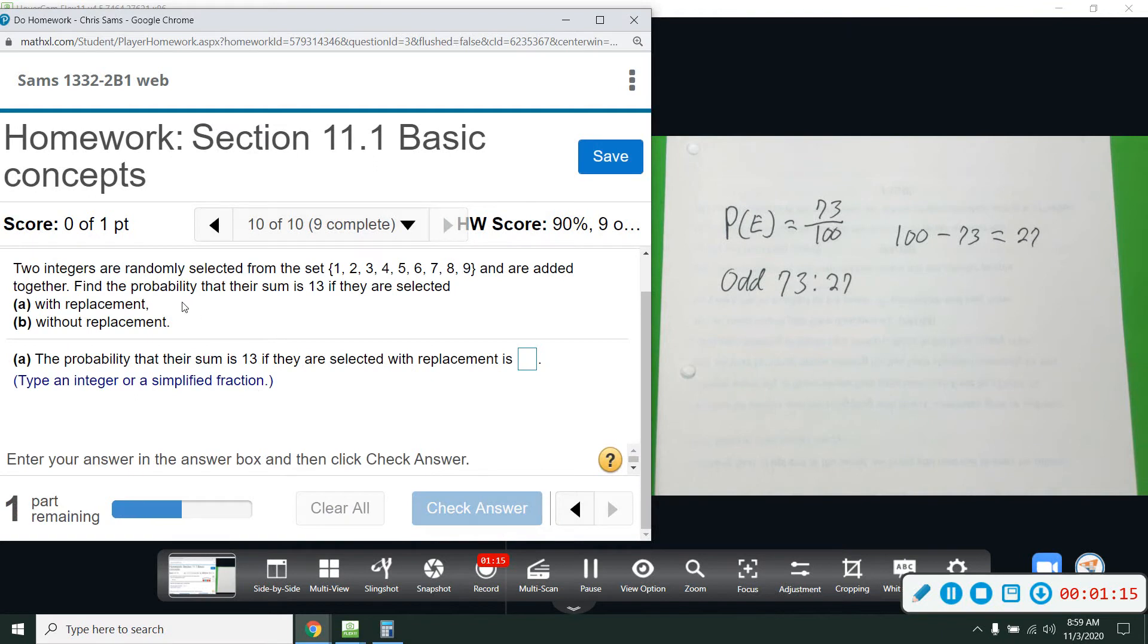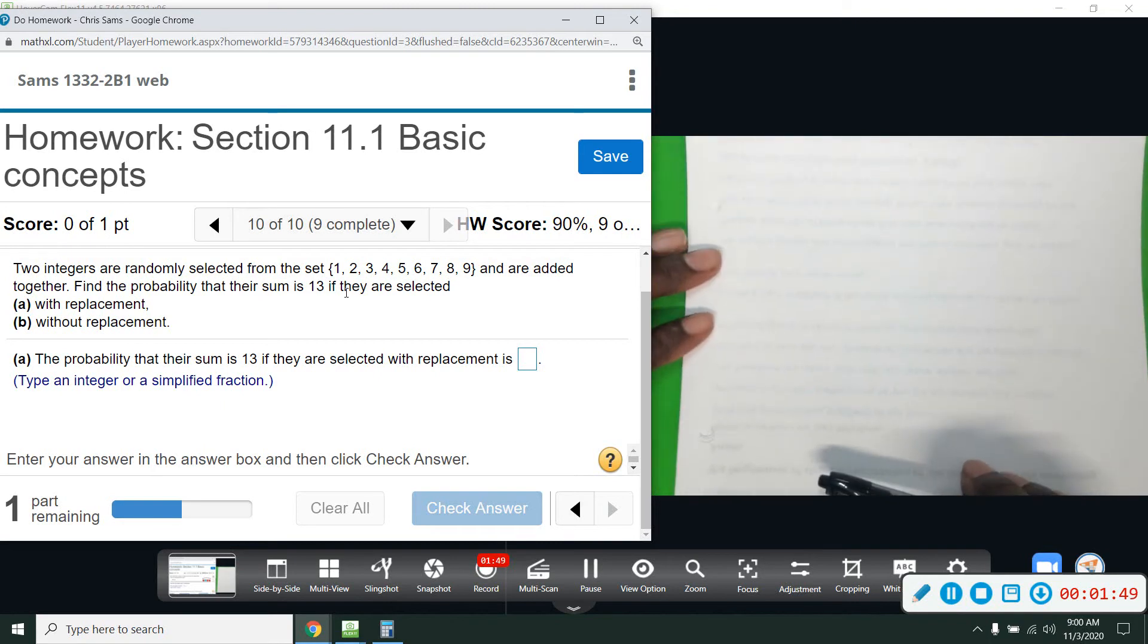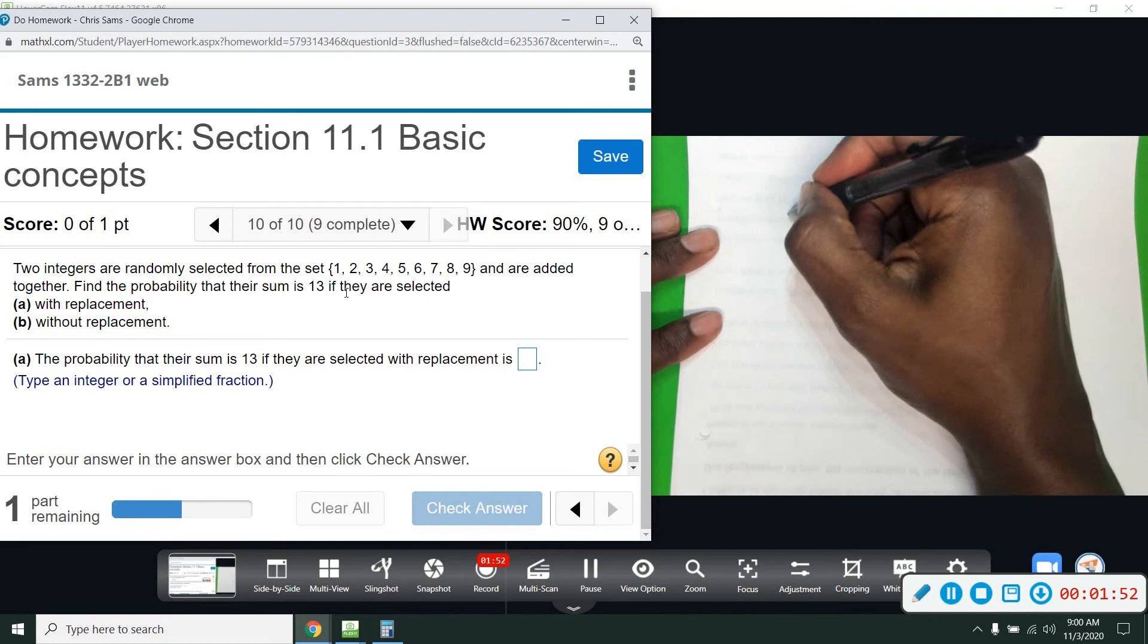And 10, this says two integers are randomly selected from the set 1 through 9 and are added together. Find the probability that their sum is 13 if they are selected with replacement and without replacement. So we're going to look at similar to that dice example, and we want their sum to be 13. So I'm not going to fill out the whole table, but I'm just going to give you an idea of what's going on.